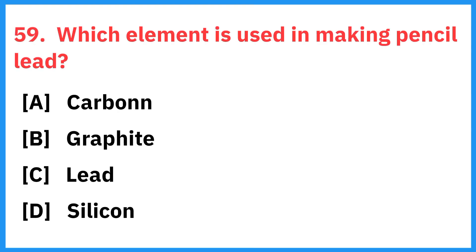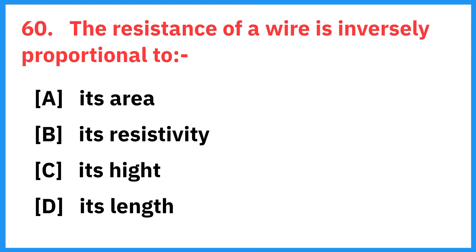Which element is used in making pencil lead? Right answer is graphite. The resistance of a wire is inversely proportional to? Right answer is its area.